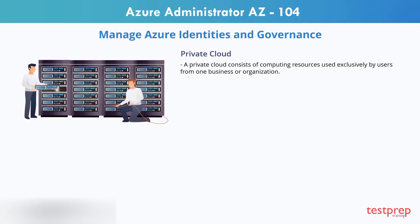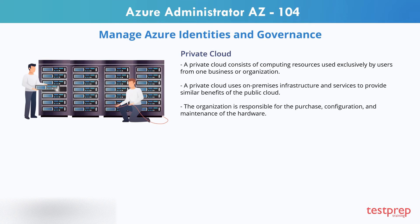A private cloud consists of computing resources used exclusively by users from one business or organization. It can be physically located at your organization's on-site data center, or it can be hosted by a third-party service provider. A private cloud uses on-premises infrastructure and services to provide similar benefits of the public cloud. It uses an abstraction platform to provide cloud-like services, such as Kubernetes clusters, or a complete cloud environment like Azure Stack. The organization is responsible for the purchase, configuration, and maintenance of the hardware, and communication between systems is usually on a private internal network or dedicated fiber-optic connection.